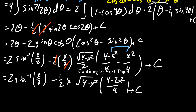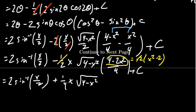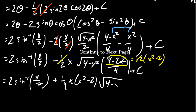Notice that 4 minus 2x squared can be factored as negative 2 times (x squared minus 2). This negative 2 cancels with the negative one half we already have. So our final simplified form is 2 sine inverse of x over 2 plus one fourth times x times (x squared minus 2) times the square root of 4 minus x squared plus a constant. It's always polite to put the square roots at the back.